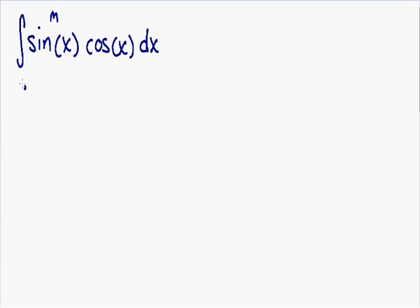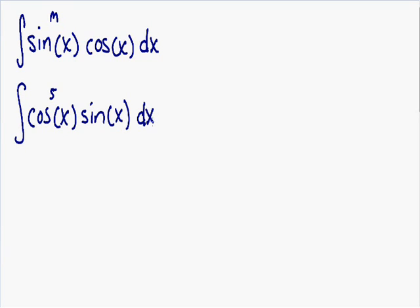Let's say we have the integral of cosine of x to the fifth multiplied by sine of x dx. Notice right away that one of the trig functions has an exponent and the other does not. That's our dead giveaway that we know we can use u-substitution.